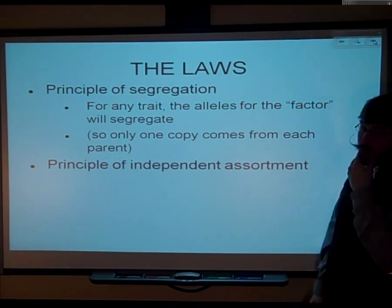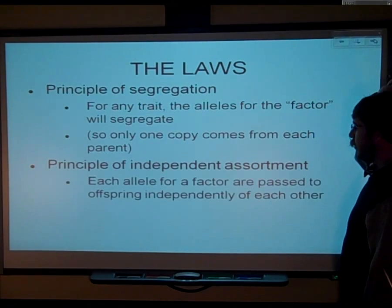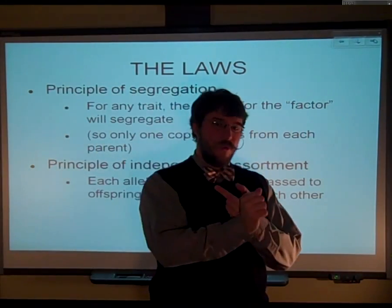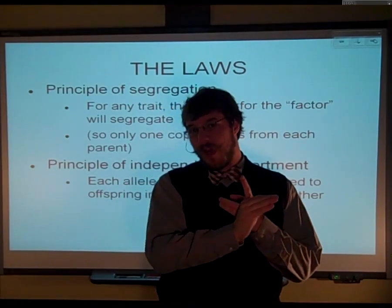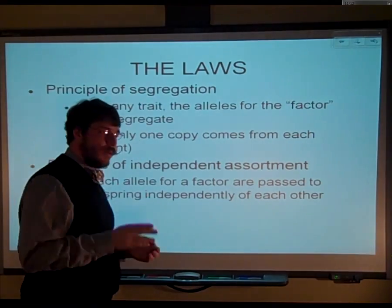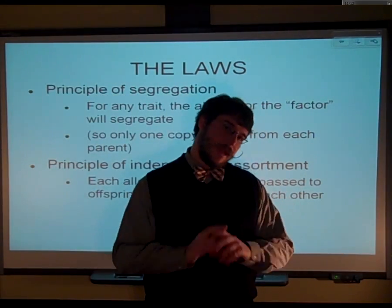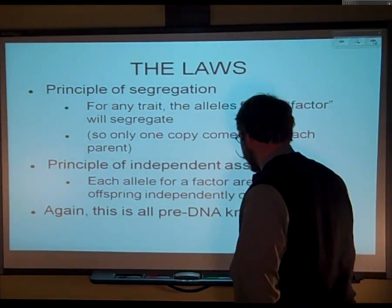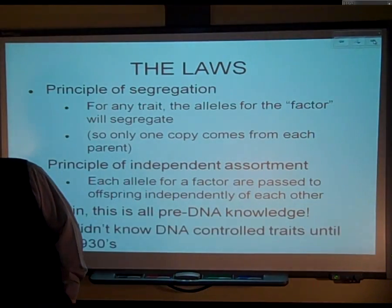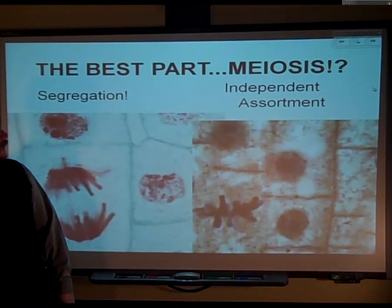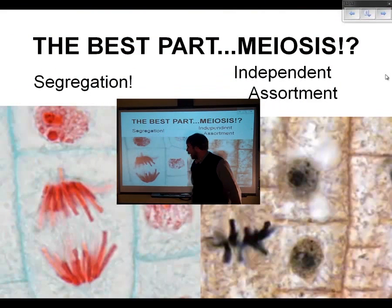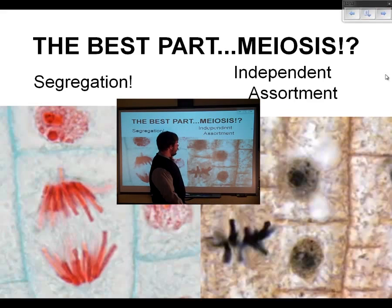The principle of independent assortment should sound familiar from our meiosis unit. This says that each allele for a factor — if you're looking at multiple traits, like the tall plant and flower color — those two traits don't go together; they independently assort from each other. That terminology came from Mendel. What's crazy is this is before we knew about chromosomes, which we didn't discover until the 1930s. When we did, we realized that segregation is actually anaphase, and that independent assortment was metaphase one from meiosis.